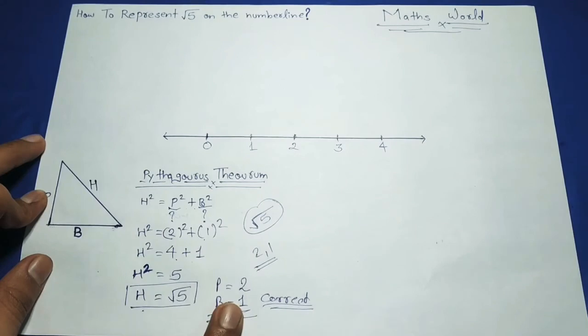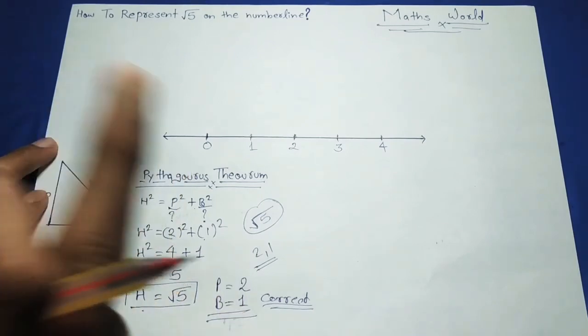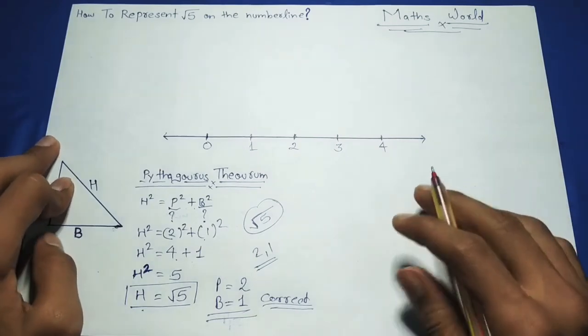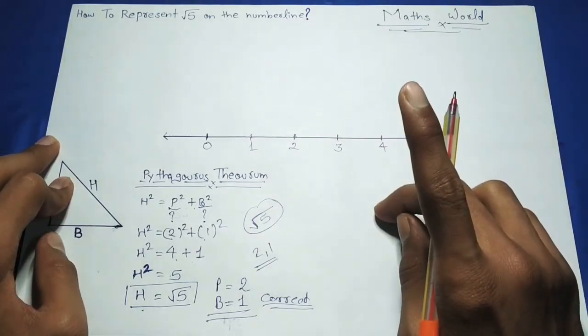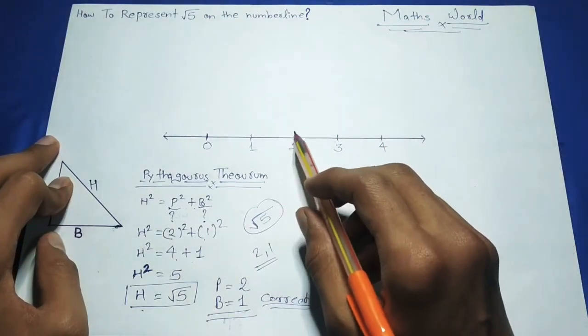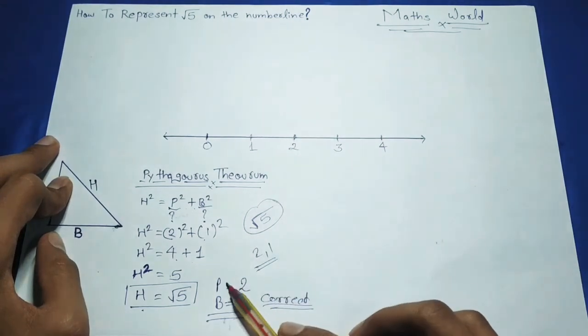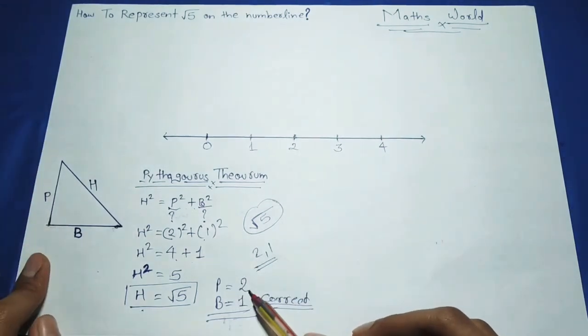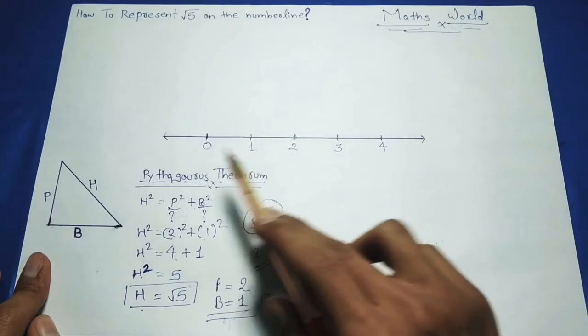Through these numbers we will do construction. Now we will move to the number line. We will start at 2 on the number line because we found P value that was 2, and the construction will be a right angle triangle.